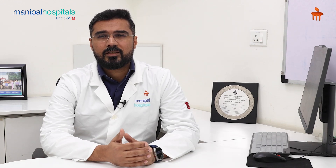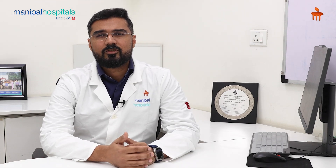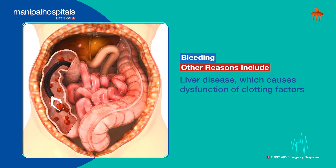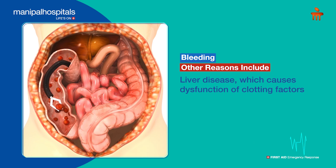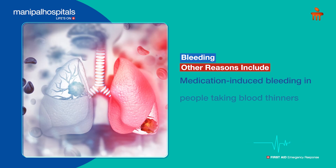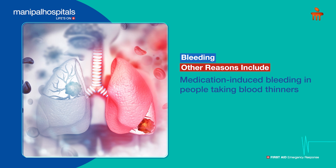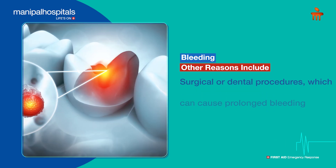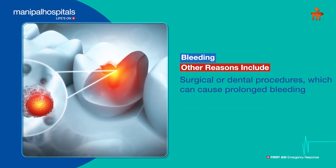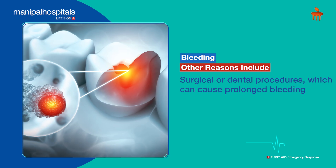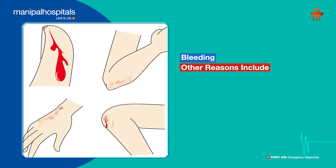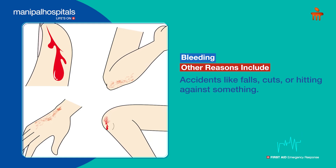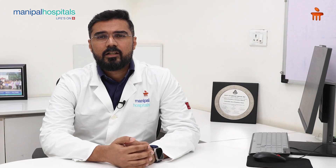There are other reasons for bleeding, like diseases such as liver disease, which leads to dysfunction of the clotting factors and can result in bleeding. Also, medication-induced bleeding — if you are on blood thinners like antiplatelet tablets, you can have prolonged bleeding. Any procedures like surgeries or dental procedures can lead to prolonged bleeding, as can trauma like falling down, hitting, or having a cut on the skin.